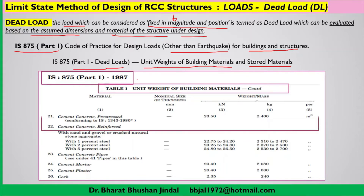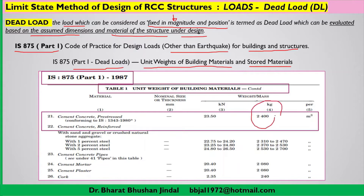For cement concrete — whether pre-stressed or reinforced — the unit weight is taken as 2400 kg per meter cube. If you are taking units in kilonewtons, it will be 23.5 kN/m³. Normally we take 2400 kg per meter cube as the unit weight of cement concrete.